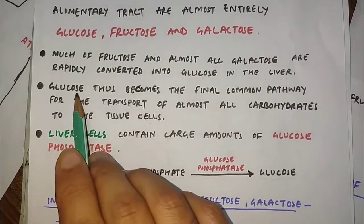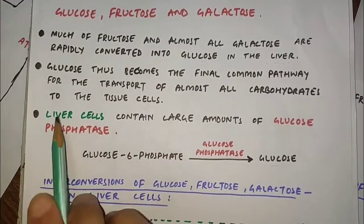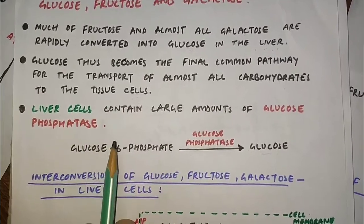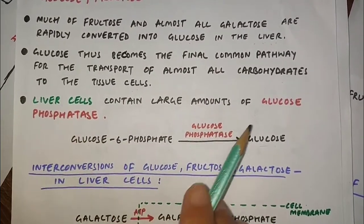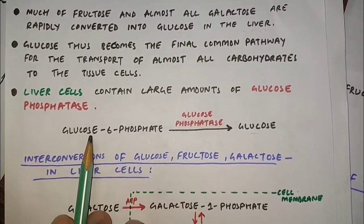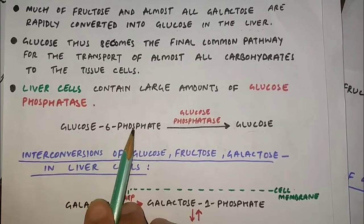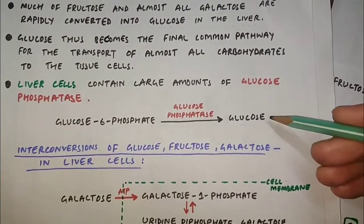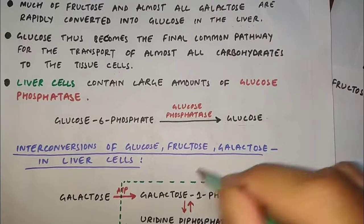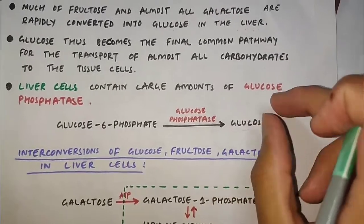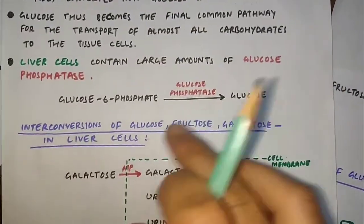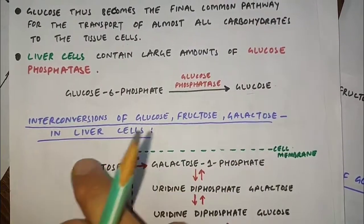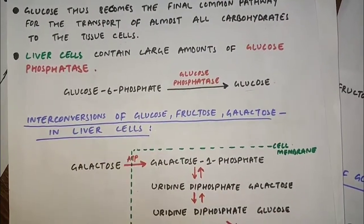Liver cells contain large amounts of glucose phosphatase — an enzyme that converts glucose-6-phosphate into glucose, making glucose available to tissue cells. Now let's come to the interconversion of glucose, fructose, and galactose in liver cells.